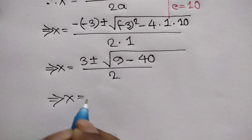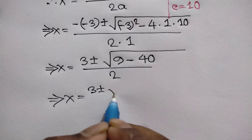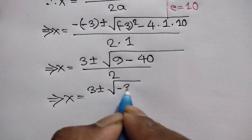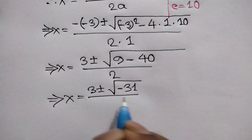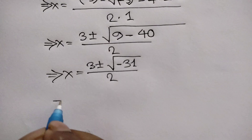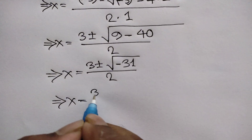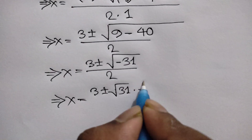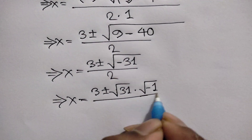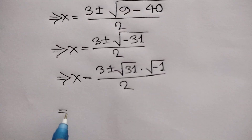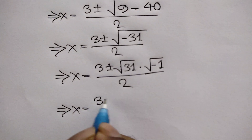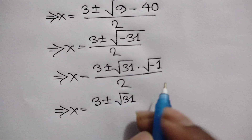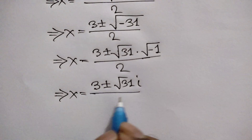So x is equal to 3 plus or minus the square root of 9 minus 40, which is negative 31, over 2. We can write this as 3 plus or minus the square root of 31 times the square root of negative 1, over 2. And we know that the square root of negative 1 is i, so we have 3 plus or minus square root of 31 times i, over 2.